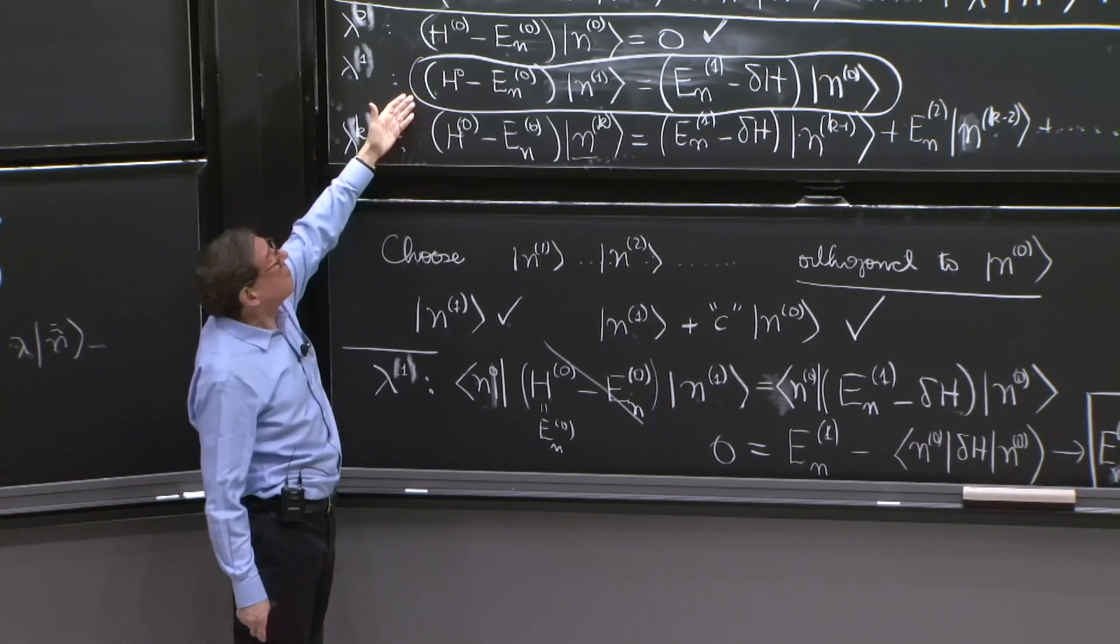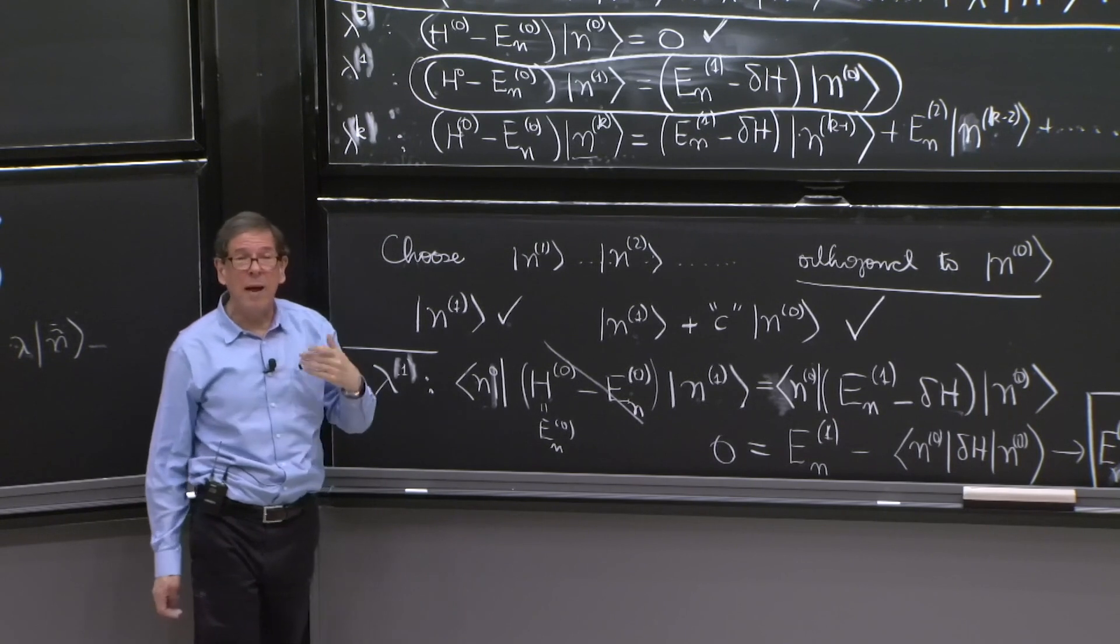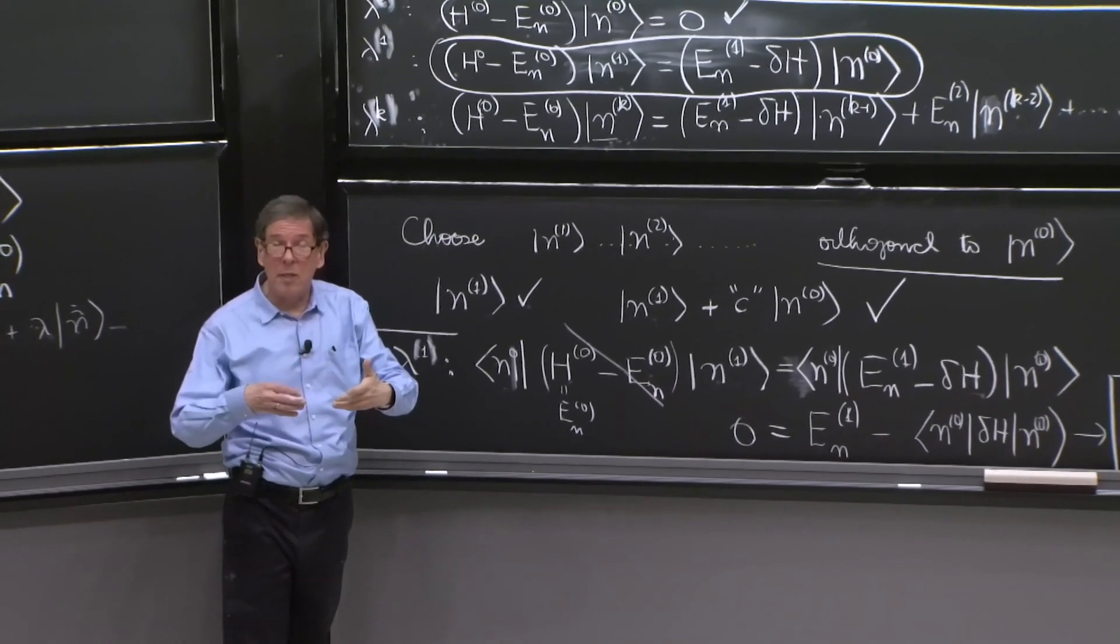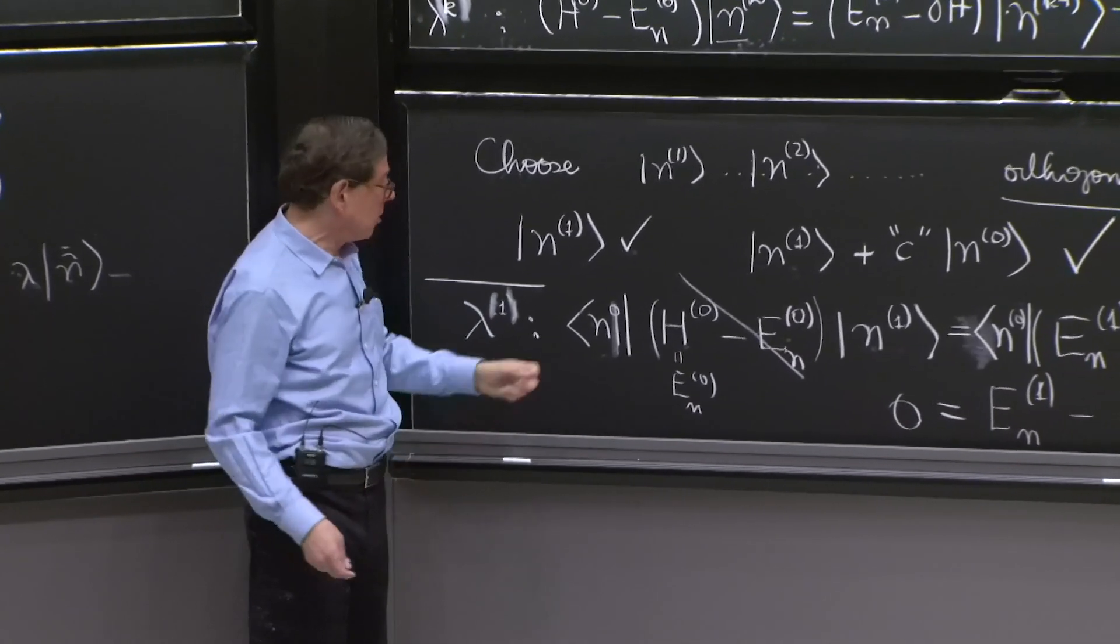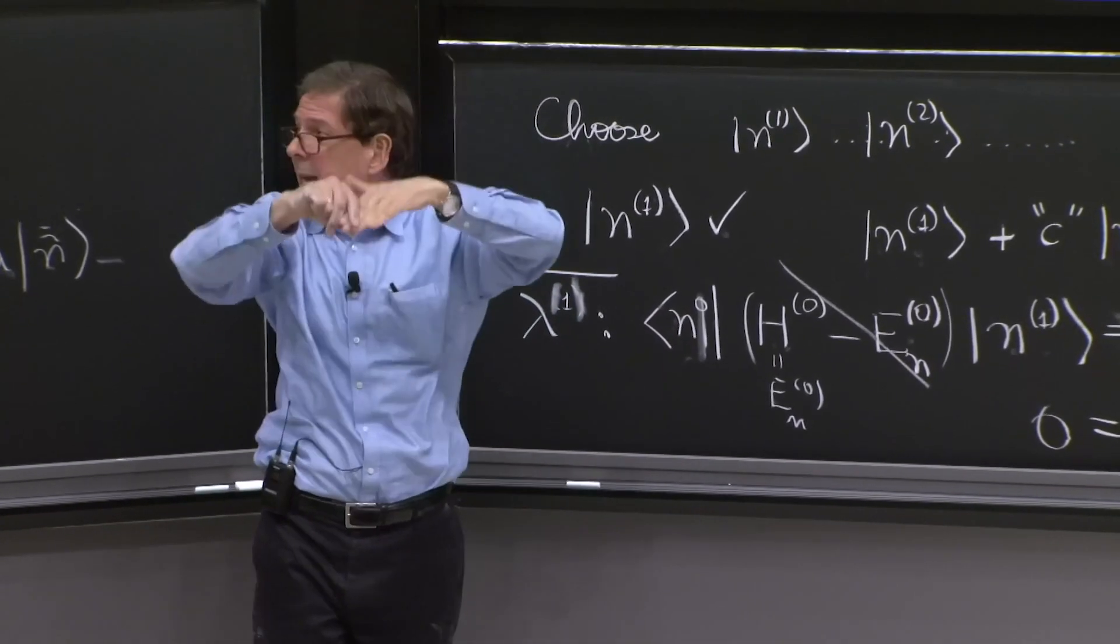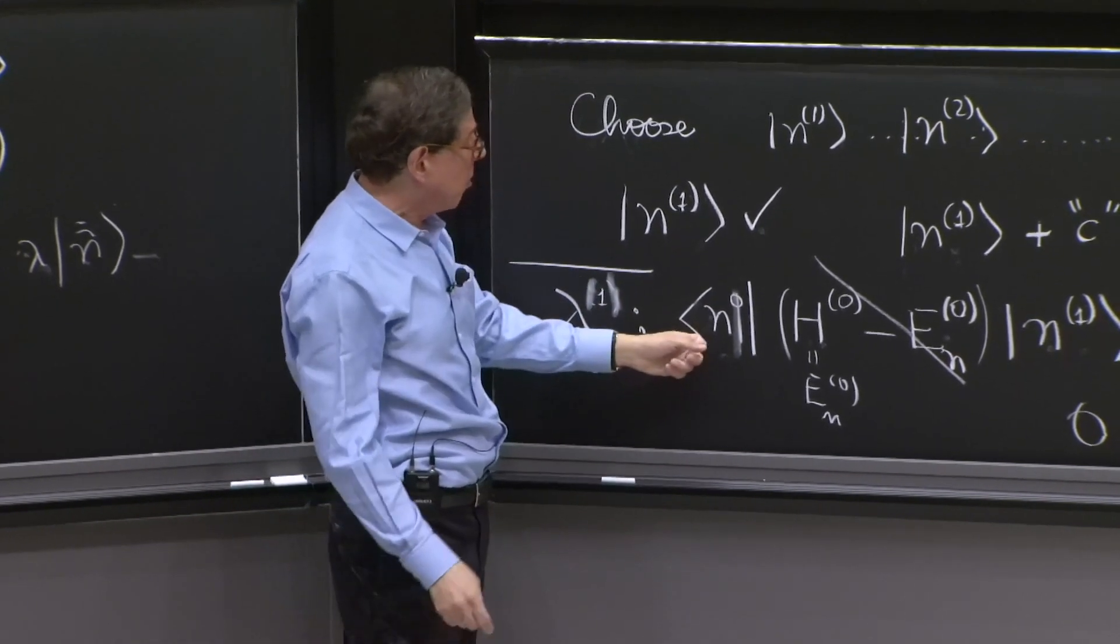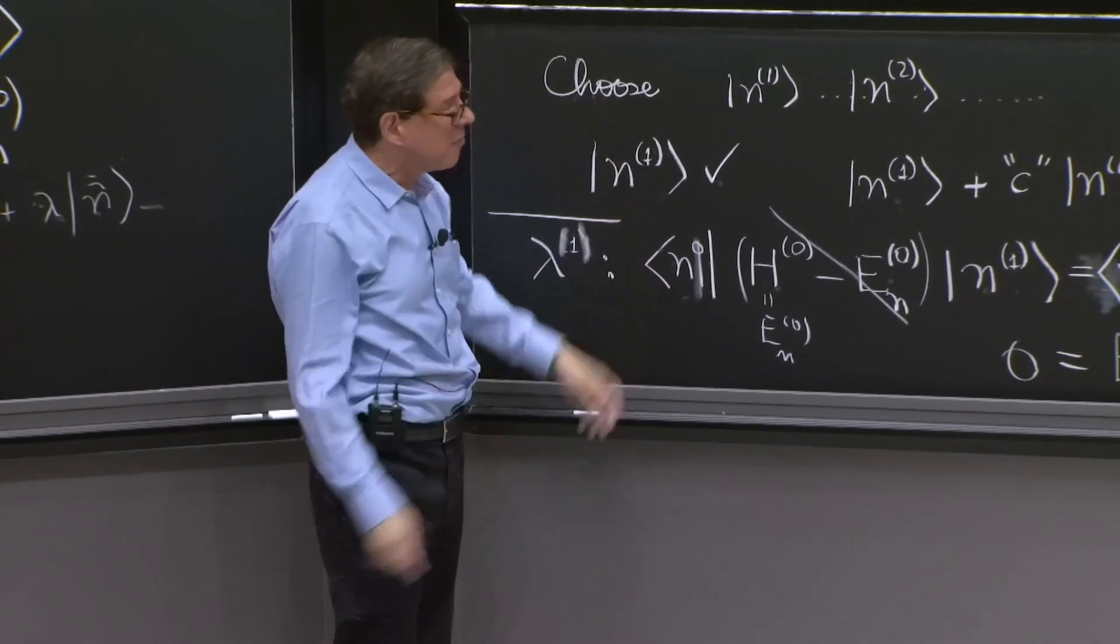So the rest of the information of this equation arises when I look at it along the components on the other states—not n0, but the k states that we introduced from the beginning, in the k0's that run from 1 to infinity.